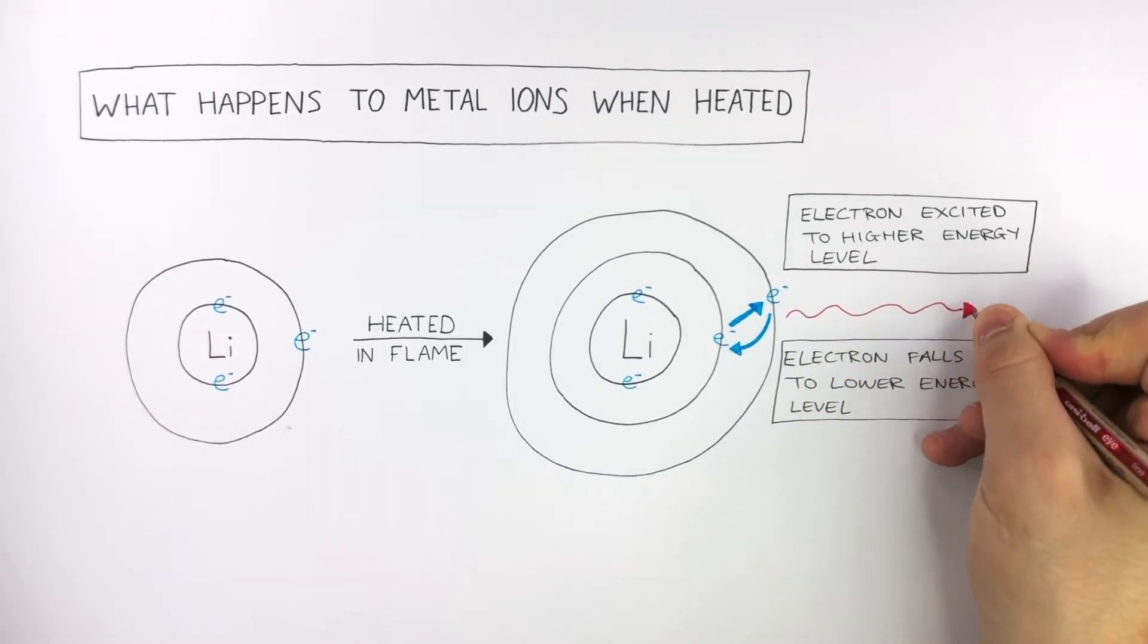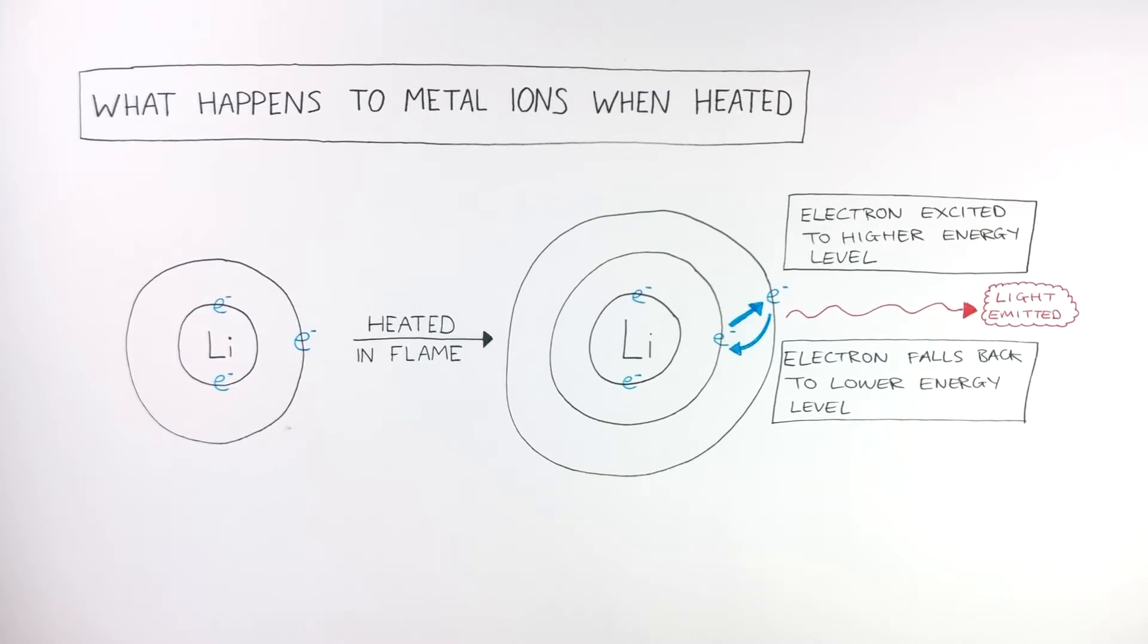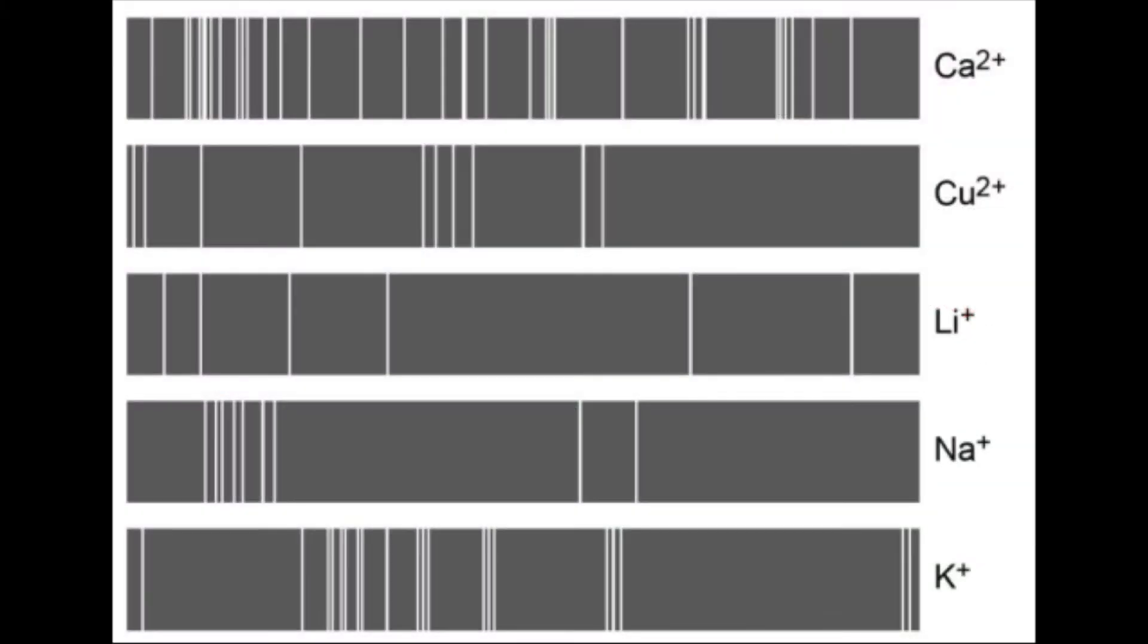The light energy is passed through a spectroscope, analyzing the wavelengths of light. Different metal ions absorb and release their own characteristic pattern of wavelengths of light, which are shown on a line spectrum.